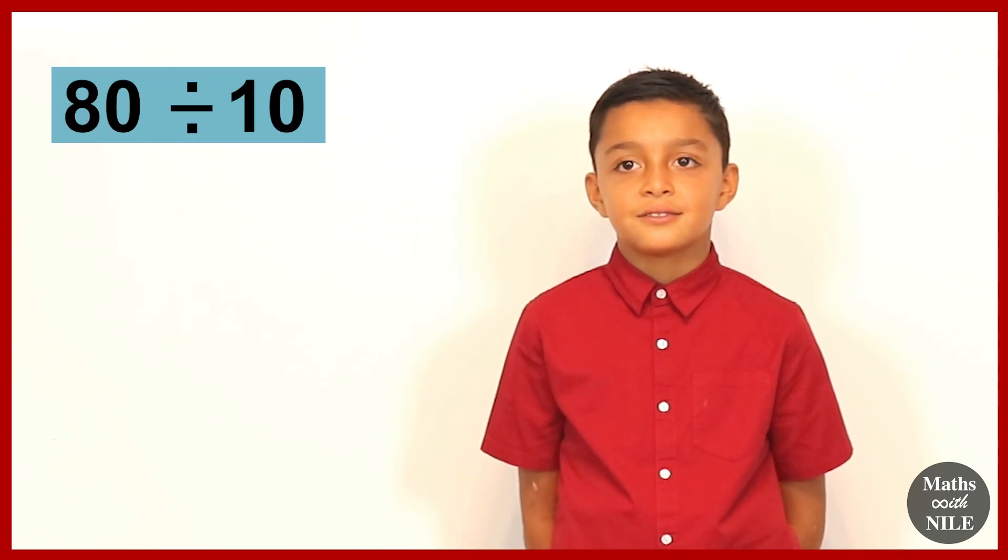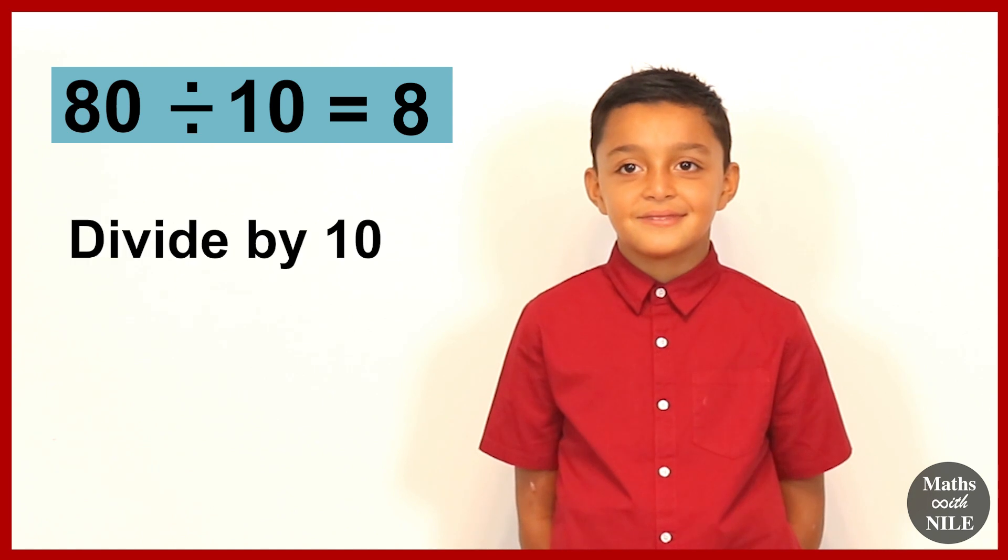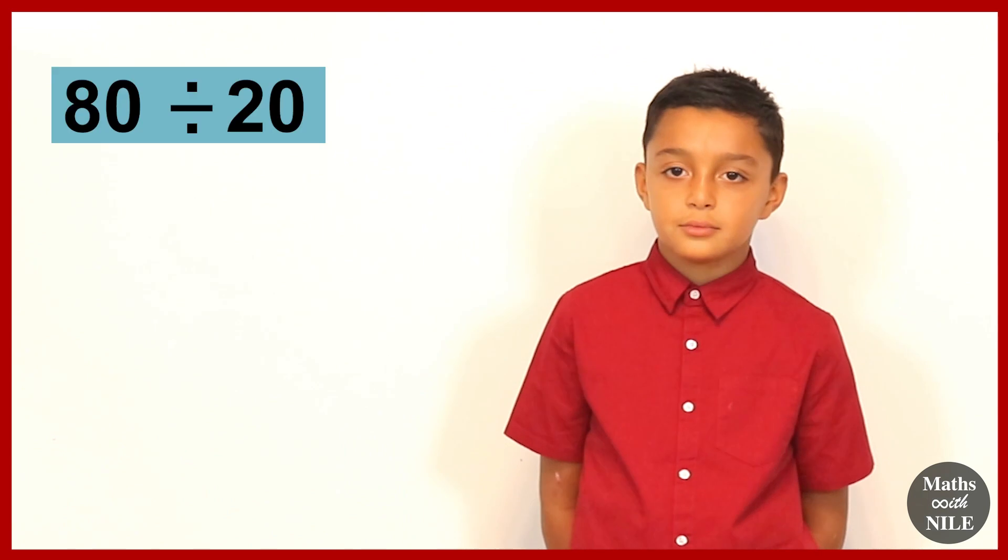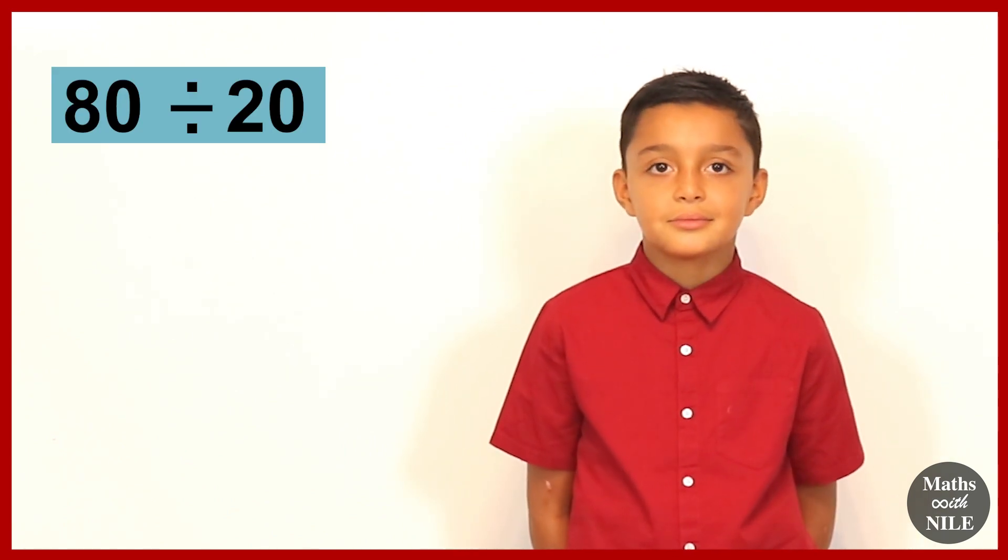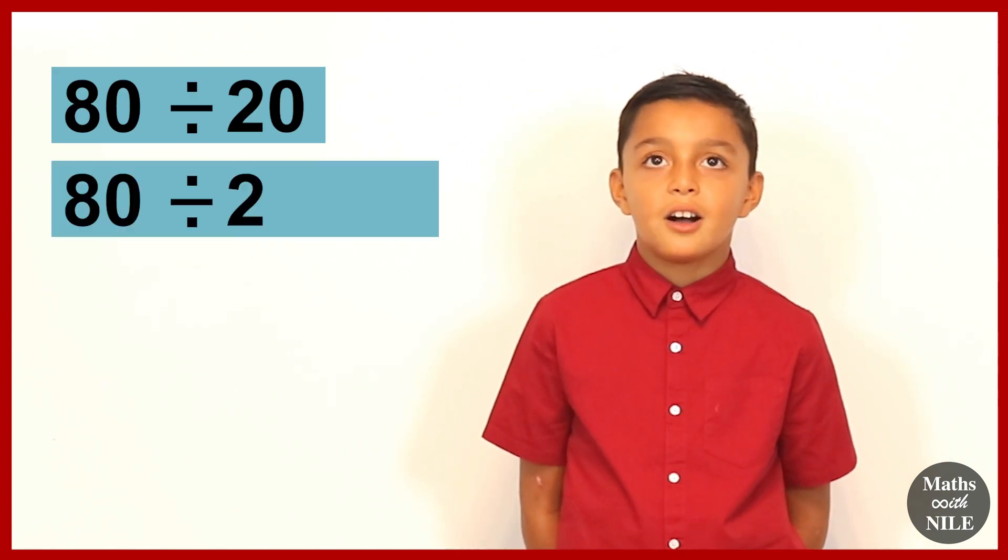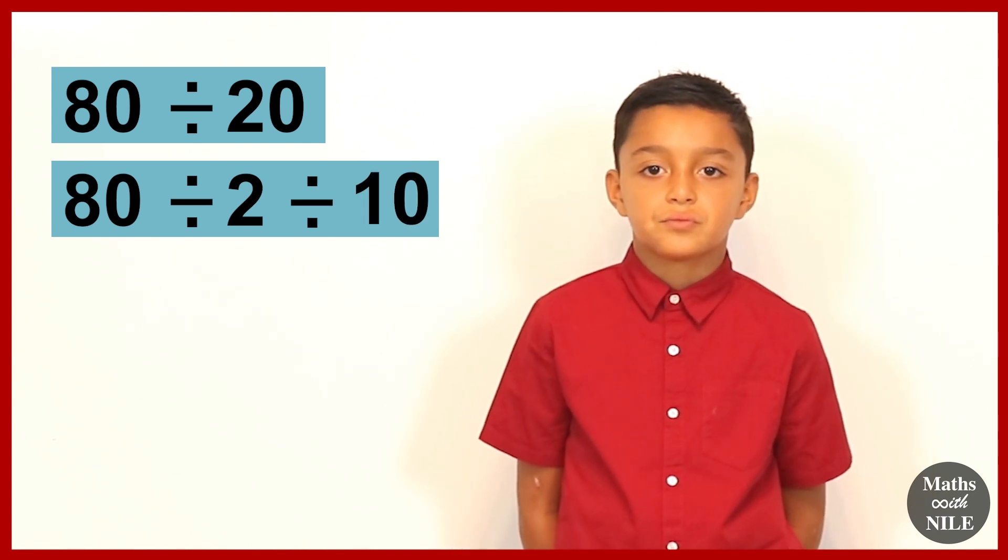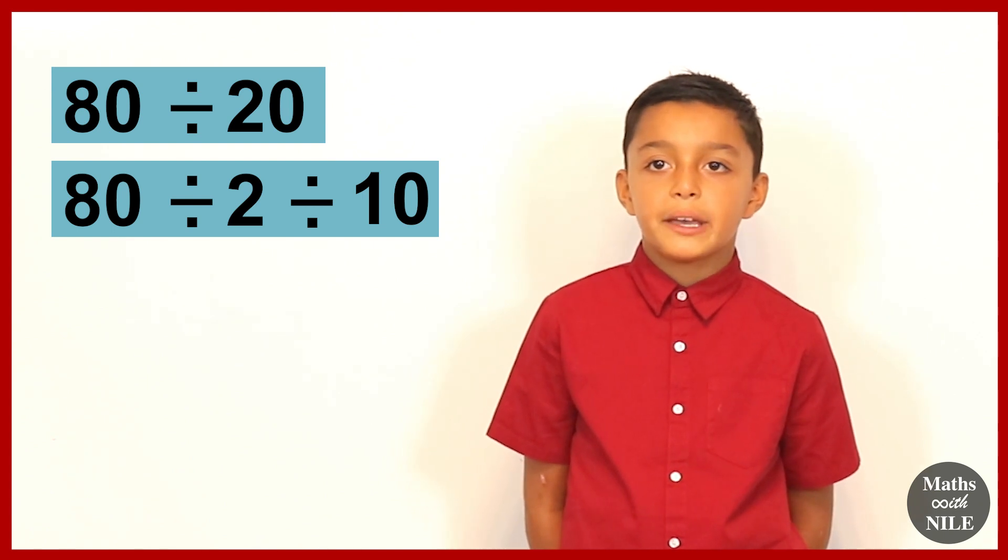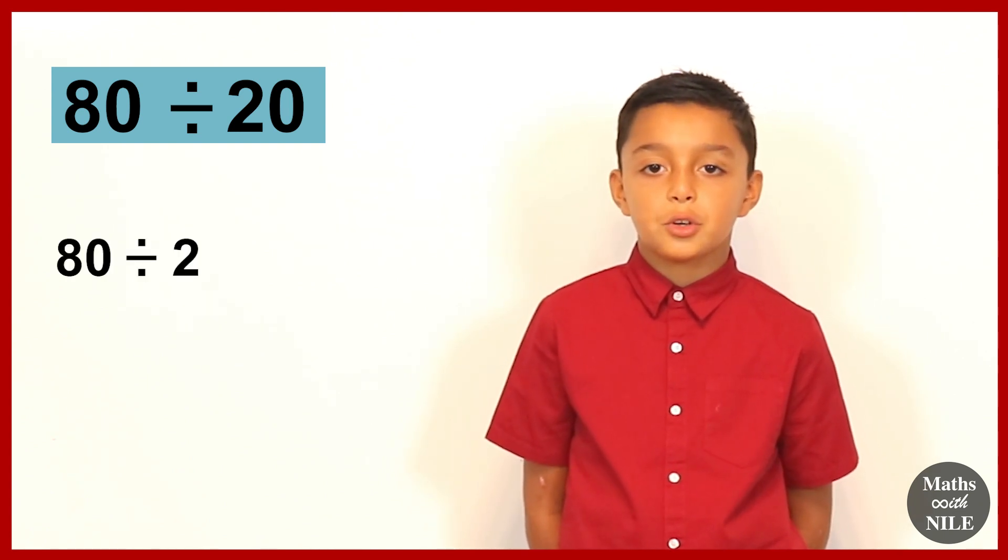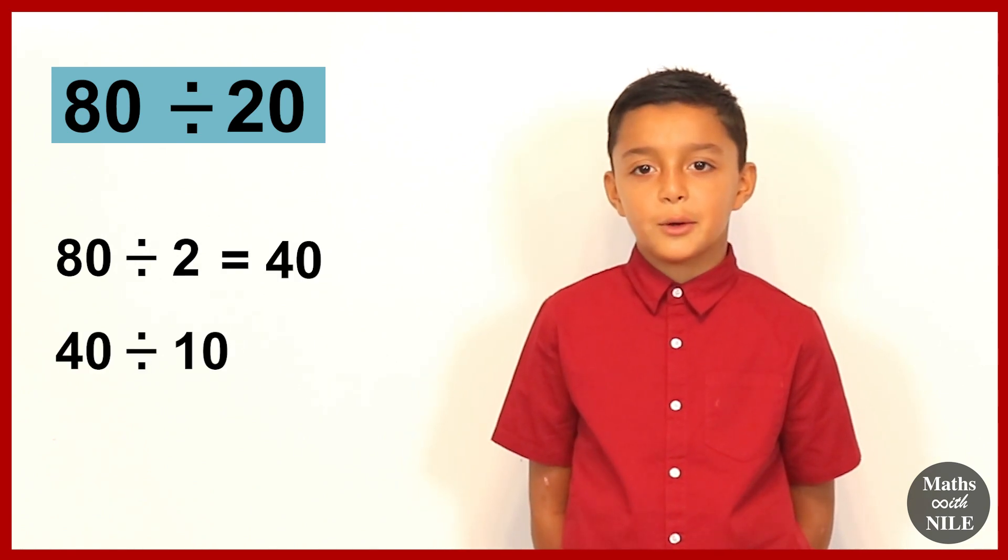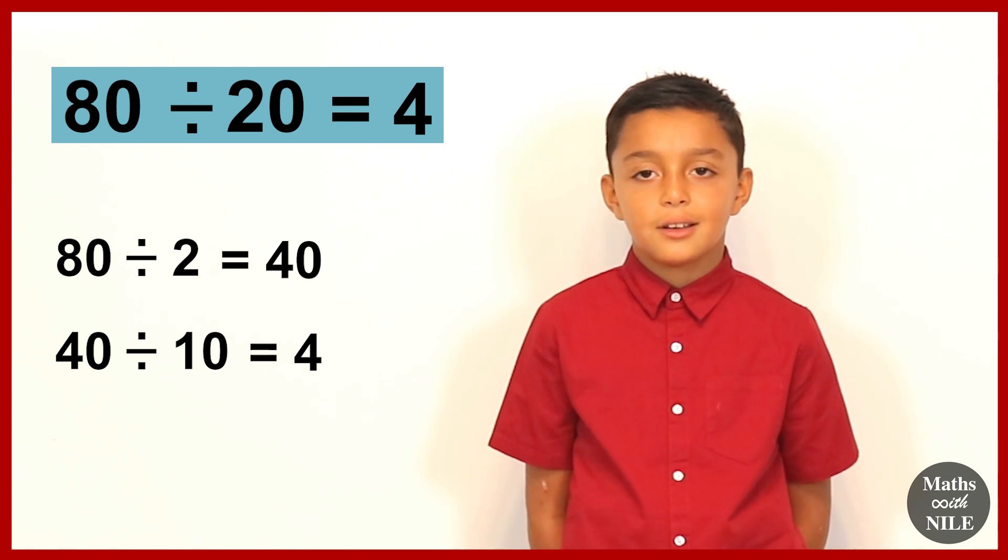Almost done. Let's just do a few division ones. What is 80 divided by 10, Niall? 8. What did you do when you divided by 10? Take away 0. So how would you work out 80 divided by 20? Half it and then take away a 0. Yes, so you can divide by 2 first and then take away the 0. So what would that give you? How would you do that? So 80 divided by 2 is 40. And then 40 take away a 0 is 4. Yes, so when you take away the 0, you divide it by 10.